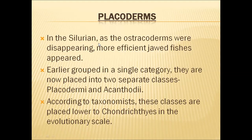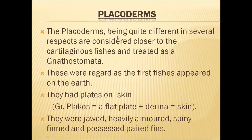When the ostracodermians were disappearing, a more efficient new group of organisms appeared on planet Earth — they had jaws. So the first jawed fishes appeared when ostracodermians were disappearing. All these extinct jawed fishes were originally grouped under a single category, Placodermi, but now they have been split into two separate classes: Placodermi and Acanthodii. These placodermians are regarded as the first true fishes to appear on planet Earth.